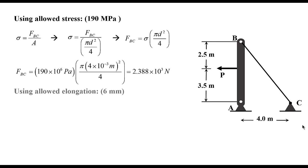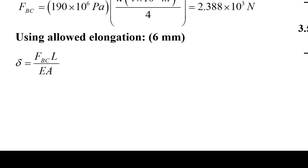So what's the other way? The other way is using the allowed elongation. So delta equals the force times the length of the cable over the E, which is the modulus of elasticity of the cable, times the cross-sectional area. Now if I solve for the force, it's going to be the elongation delta E A over L.